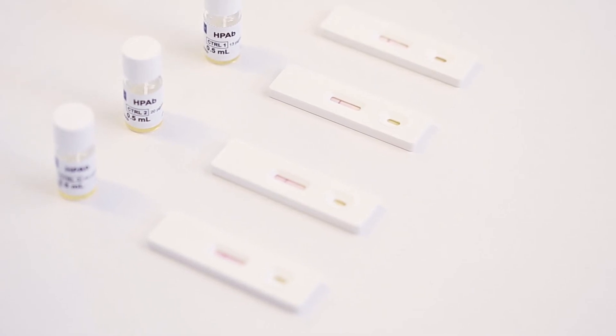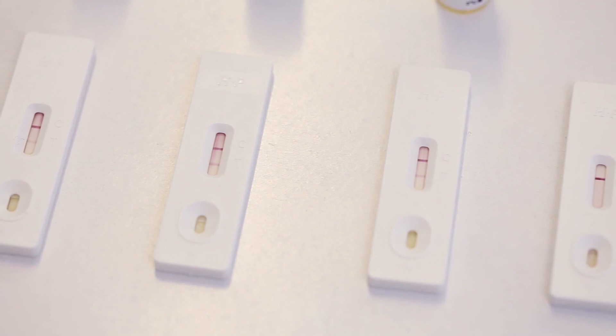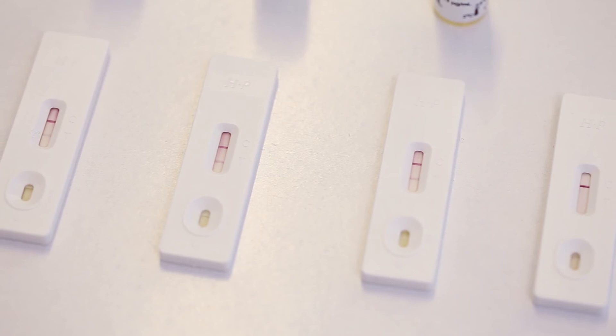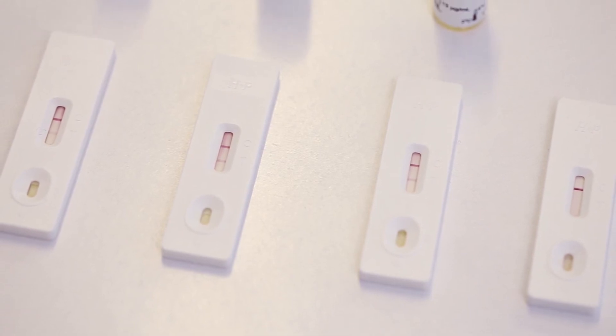A test is negative if only the control line is visible. A test is positive if both the control line and the test line are observed.